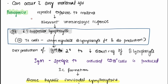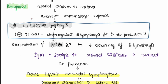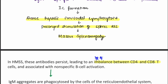HMS begins with repeated exposure to malaria, which creates an aberrant immunological response. This is due to a decrease in T suppressor lymphocytes. Normally, T suppressor cells down-regulate B cell function and antibody production, but here their count decreases, leading to increased production of IgM antibodies secondary to decreased down-regulation of B lymphocytes. This IgM is specific to activated CD8 cells, and ultimately immune complex formation occurs.